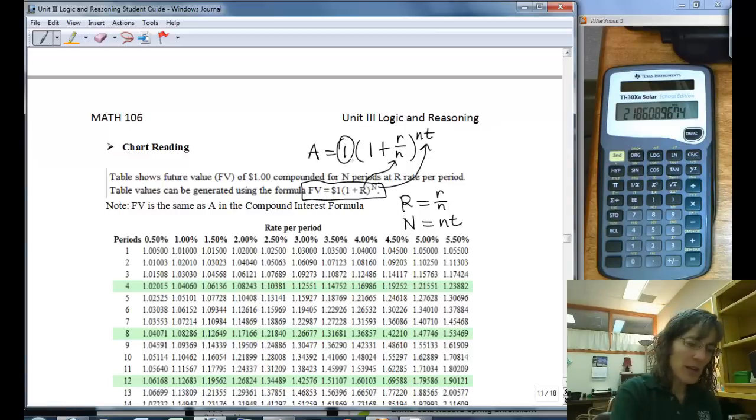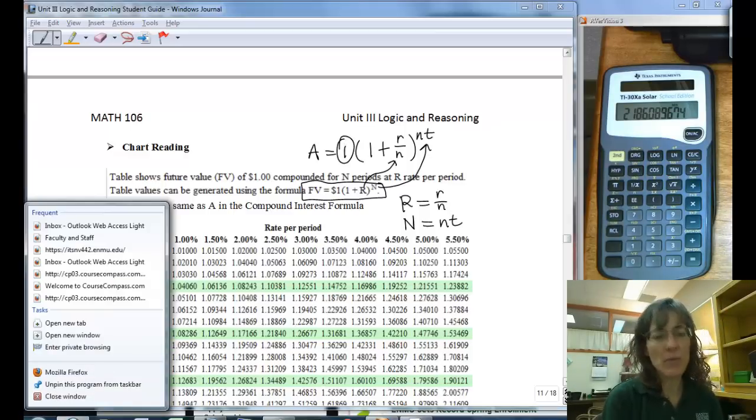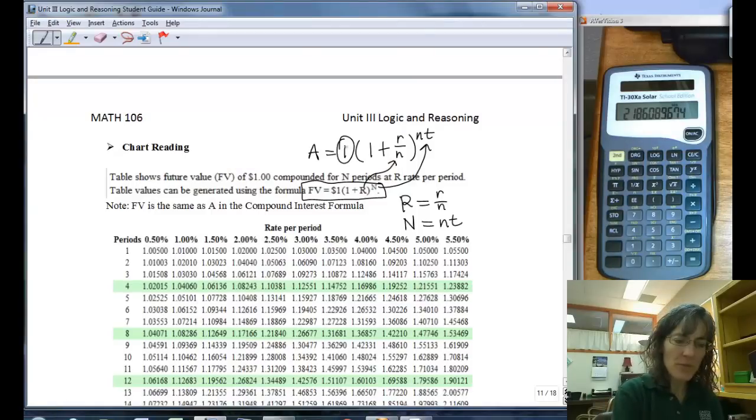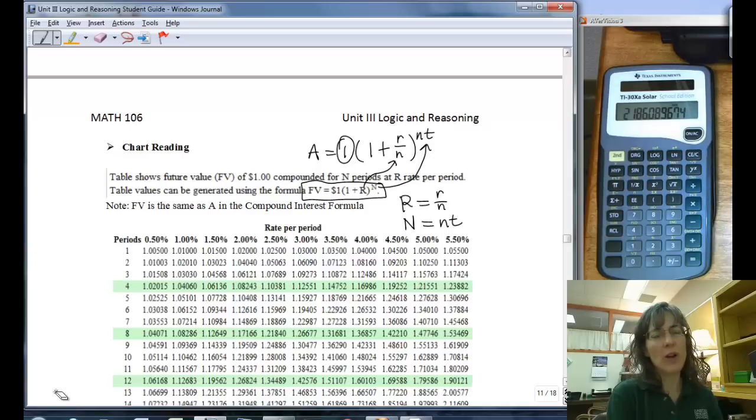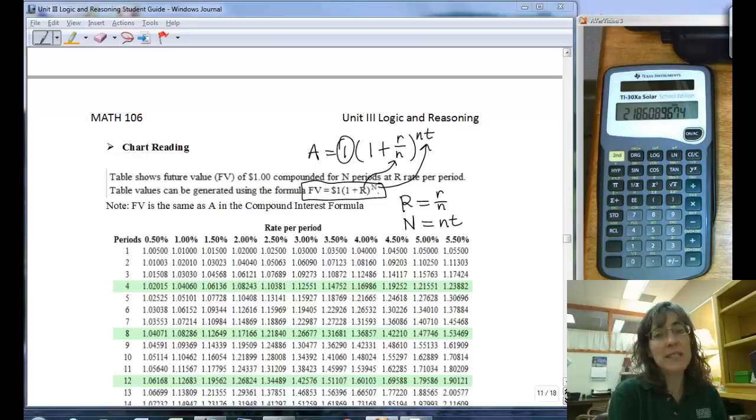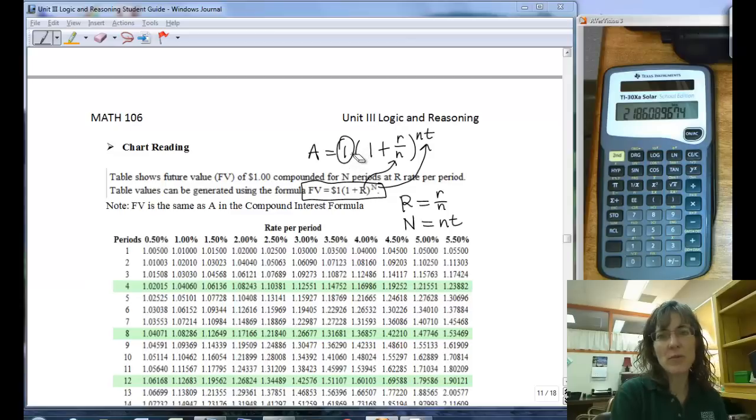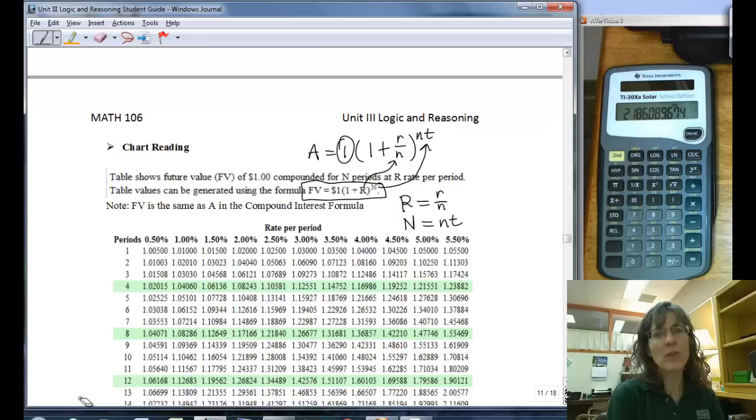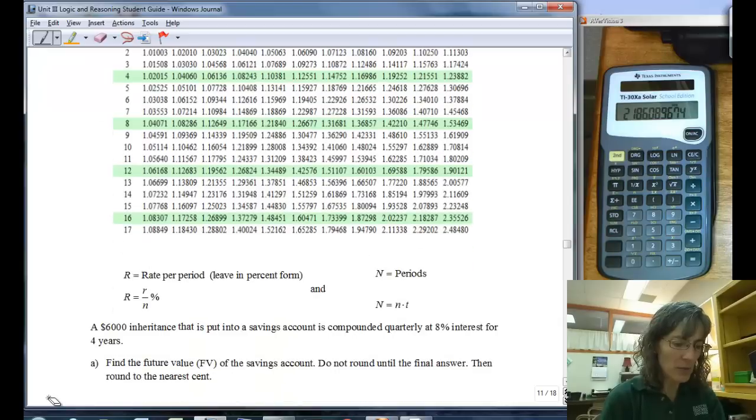This part right here, the table is going to give you the amount for $1, but if we have more than that, you just multiply it for however many dollars you have. So if I have $6,000, and I know how much interest I'll earn for $1, I can multiply by $6,000 and find out how much that $6,000 was going to earn. So let's take a look at a problem.